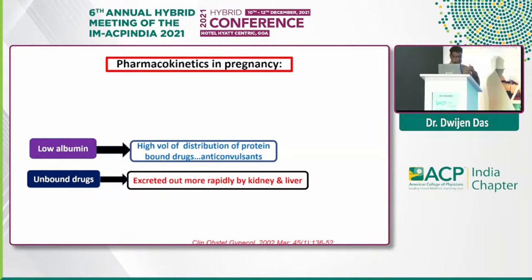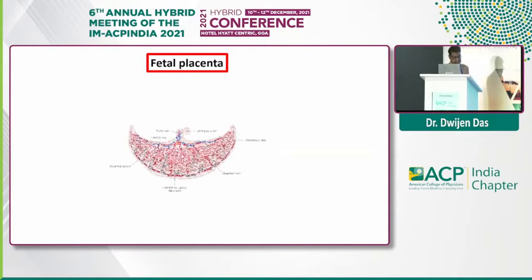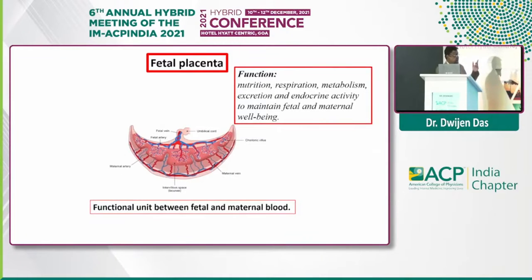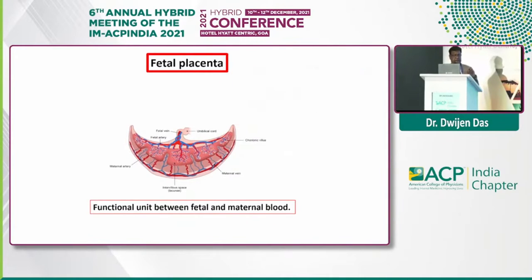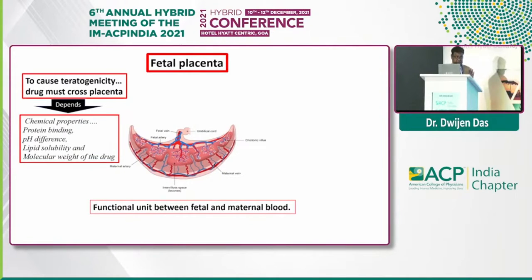Unbound drugs, once they remain unbound, are excreted more easily and rapidly by the kidney and liver — and that is another important issue. A little bit about the placenta: the placenta is the functional unit between the fetal and the maternal blood, and it maintains nutrition, respiration, metabolism, excretion, and endocrine function to the fetus. If a drug needs to cause a teratogenic effect on the fetus, it has to cross the placenta. This depends on some chemical characteristics such as protein-binding capacity, pH difference between the two environments, lipid solubility, and molecular weight of the drugs.